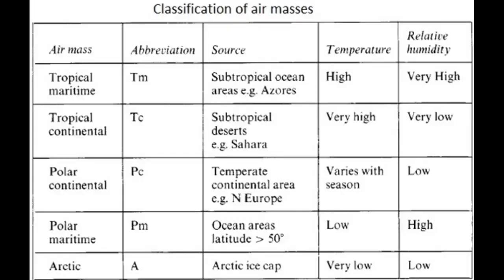Let's have another classification of air masses. In the last right column we have the air mass; in the second right column, the abbreviation; at the center, the source; in the second left column, the temperature; and in the last left column, the relative humidity.